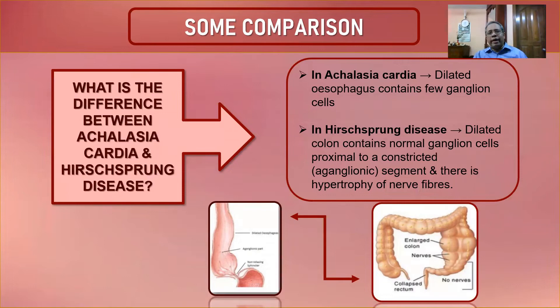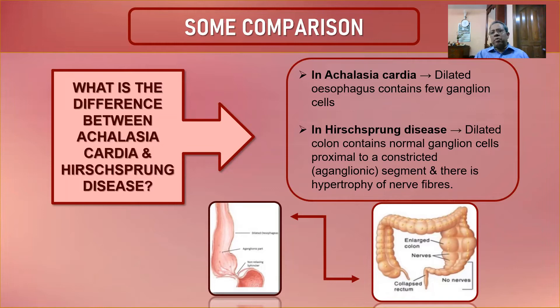An important comparison — frequently asked in viva and written exams — is achalasia cardia versus Hirschsprung's disease. Both have disordered peristalsis but are opposite in location of ganglion absence. In achalasia, the myenteric plexus is absent in the upper dilated part of the esophagus. In Hirschsprung's disease, the aganglionic segment is the lower constricted part — in the rectum or colon — while the dilated part above contains normal ganglion cells.